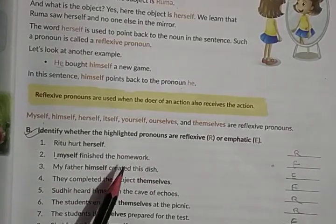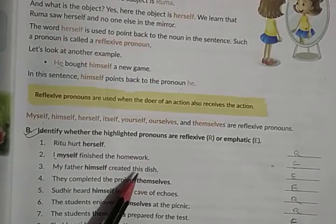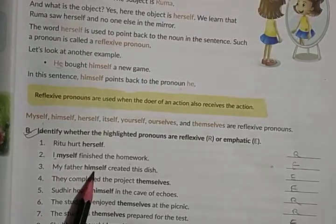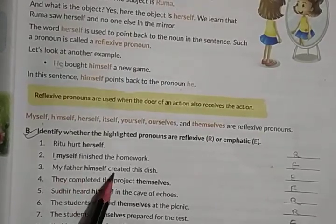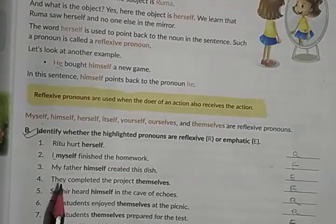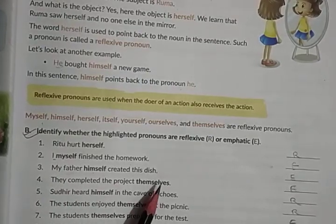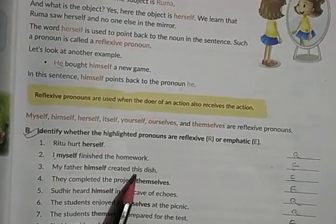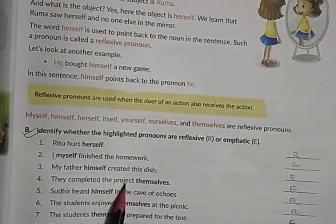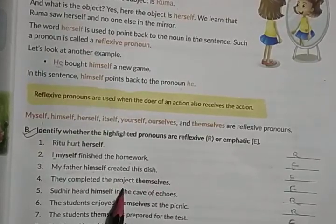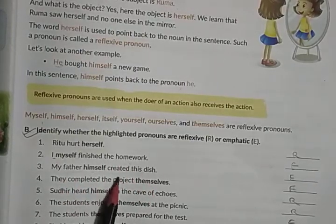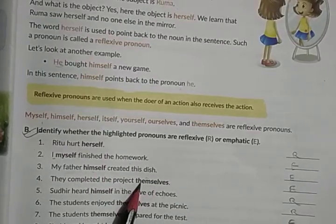'My father himself created this dish.' Here 'himself' is used to lay stress on 'my father' — himself is emphasizing my father — so 'himself' will be emphatic pronoun. 'They completed the project themselves.' Themselves is emphasizing 'they,' not the project — so 'themselves' will be emphatic pronoun.